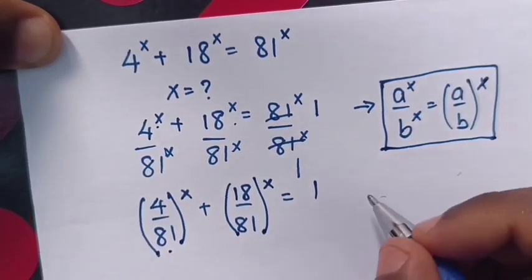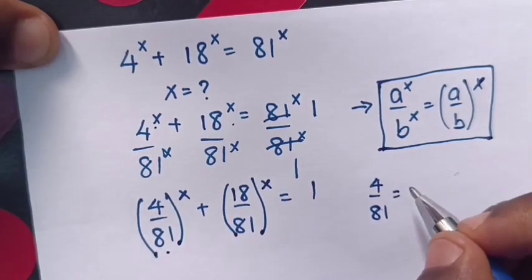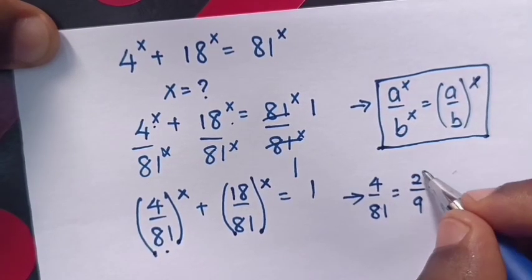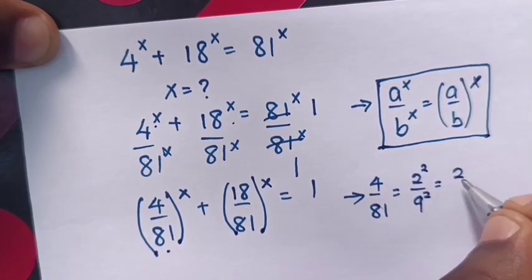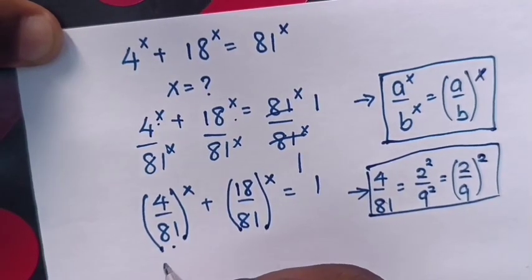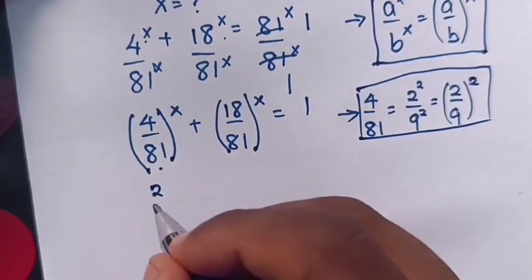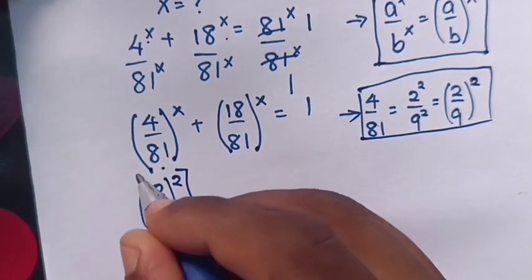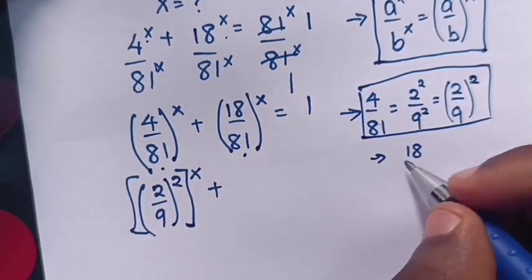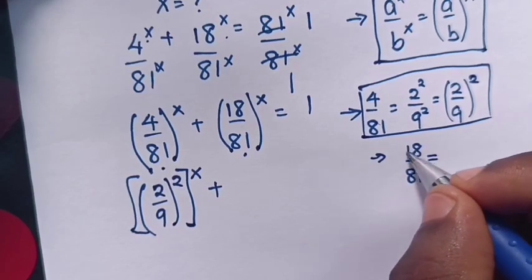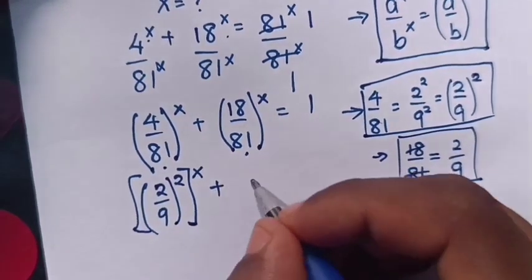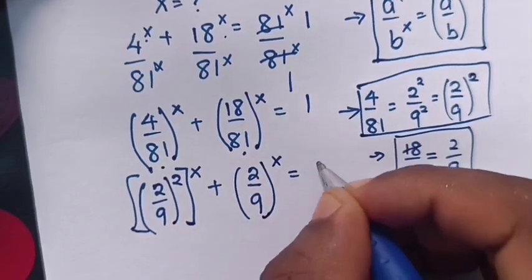Then we simplify 4 over 81: 4 is 2 times 2 and 81 is 9 times 9, so it will be 2 squared over 9 squared, which is equal to (2 over 9) squared. So (4 over 81) power x becomes (2 over 9) squared power x. We simplify 18 over 81: 18 divided by 9 is 2 and 81 divided by 9 is 9, so it will be 2 over 9. Therefore, (2 over 9) power x is equal to 1.